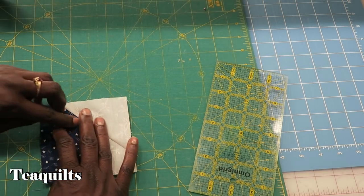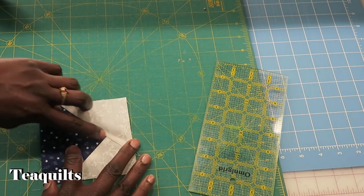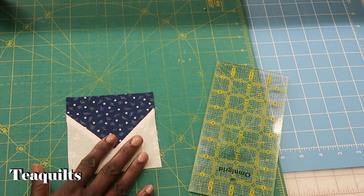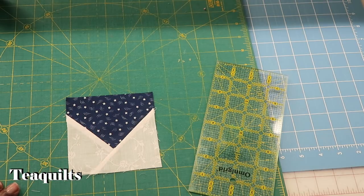And then we want to go ahead and press this seam down as well. And then when you do that, you'll have a unit that looks like this once you press it.